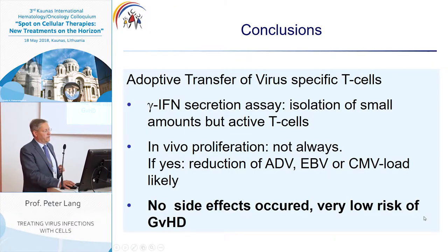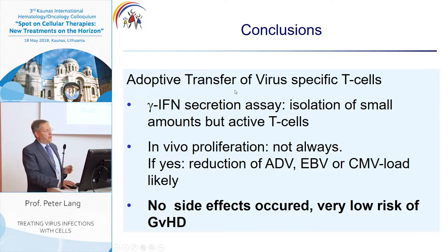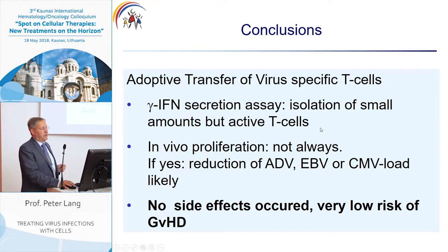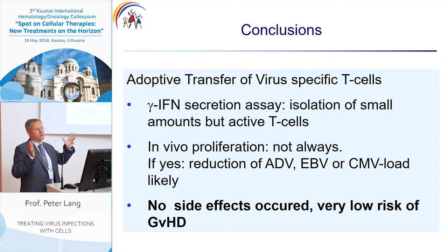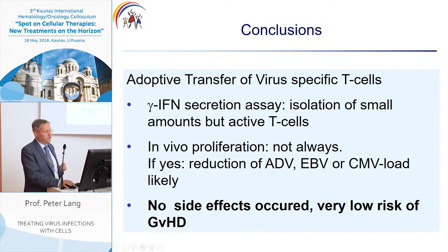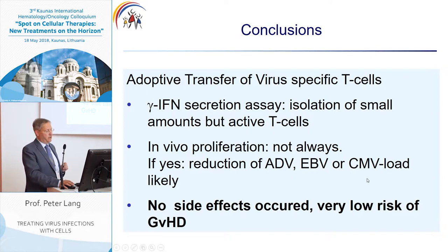The conclusions are: adoptive transfer of virus-specific T cells is possible. After the secretion assay, we can isolate a very small but active amount of T cells. In vivo proliferation occurs in about two-thirds of patients. If it does occur, we can reduce ADV, EBV, or CMV load very likely, with especially no significant side effects. We also observe a very low risk of GVHD.